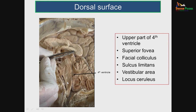On the dorsal surface, which forms the floor of the fourth ventricle, in the middle there is an elevation called the facial colliculus, produced by the facial nerve and the abducent nerve. There is a sulcus limitans separating the sensory from the motor area. Lateral to this is the vestibular area where the vestibular nucleus is present. At the sulcus limitans is the superior fovea, and the discolored area is called the locus ceruleus.